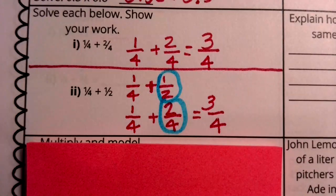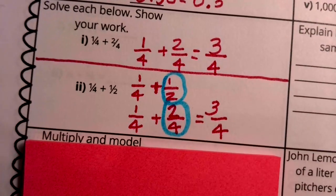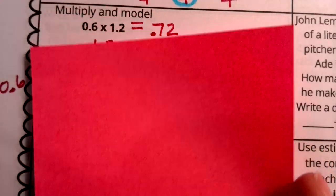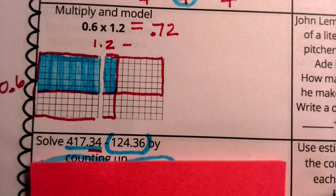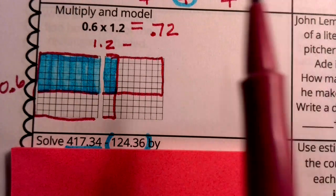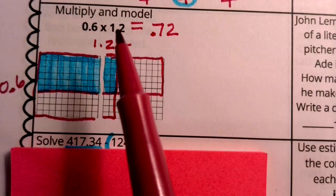This is where we get to the answer of three fourths here, just like three fourths here. Let's take a look at another multiplying decimals. But this one was unique because in this problem, we were looking at two grids.